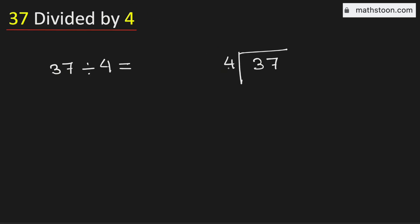We know that 4 times 9 is 36. Subtract, we get 1. 1 is less than 4, that is why we will put a decimal here so that we can borrow 1, 0.